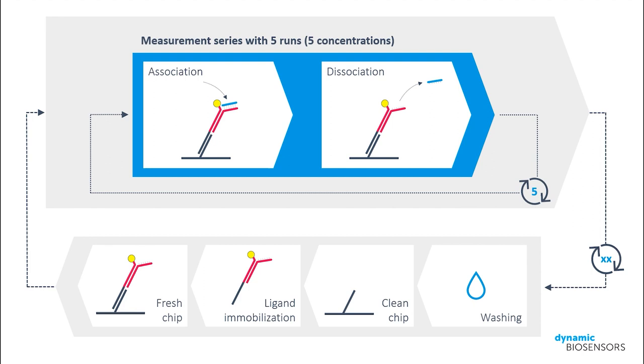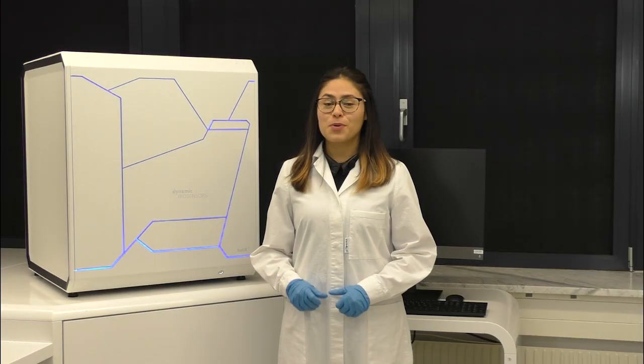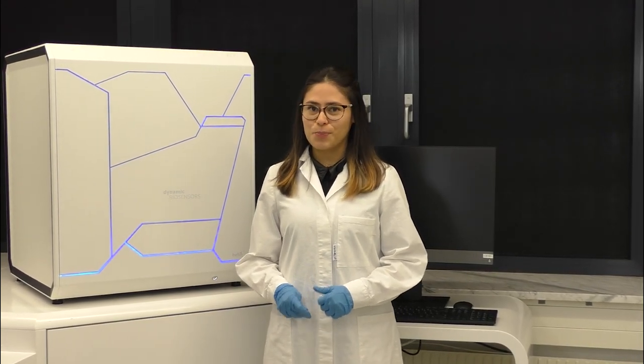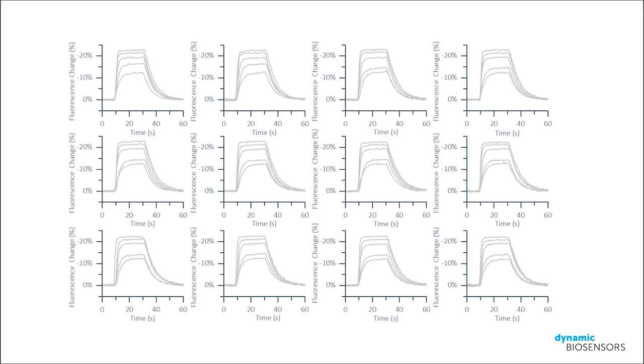We just need to enter how often we'd like to repeat the experiment and make sure the well plate in the auto-sampler contains enough analyte ligand solutions for all of the runs. I have prepared samples for 14 experiments and already started the repeatability run. All 70 runs were completed successfully and stable signals were observed for all measurements. Let's examine the statistics of the analyzed rate constants.